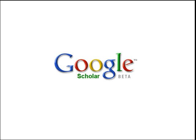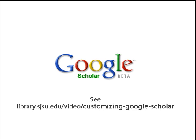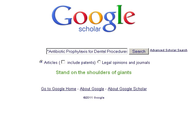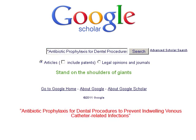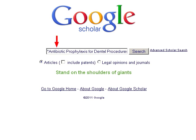Google Scholar is Google with a twist — it only searches the scholarly literature. And there is a way to set it up so it searches across all of San Jose State's databases at one time. Let's try a sample search. Enter the title of the article you'd like to find. Be sure to enclose it in quotes. By putting the title in quotes, you're telling Google to search on it as a single phrase, instead of searching for each separate word no matter how they're combined.